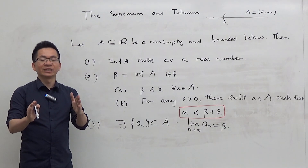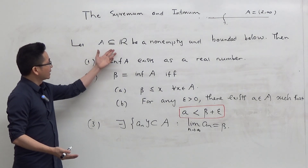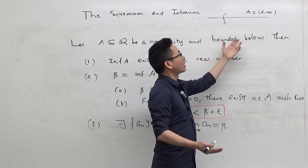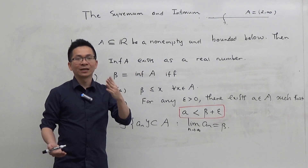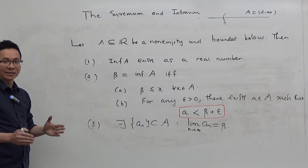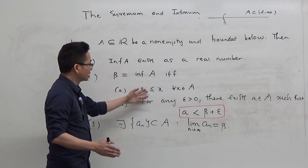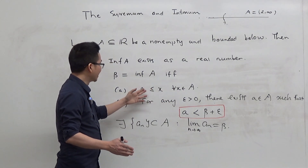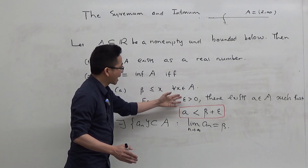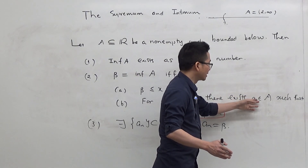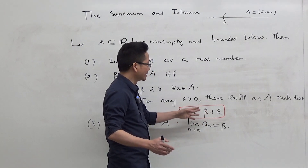From the definition of the infimum of a set and what has been done for the supremum, we obtain the following important properties. Let A be a non-empty subset of the real line that is bounded below. Then the infimum of A exists as a real number; this property follows from the completeness axiom. The second property says that beta equals the infimum of A if and only if, first, beta is a lower bound of A — meaning beta is less than or equal to x for all x in A — and second, for any epsilon greater than zero, there exists an element a of the set A such that a is strictly less than beta plus epsilon. This second property is very important.